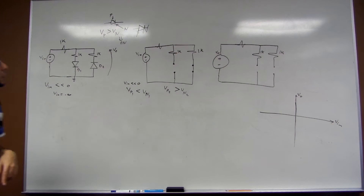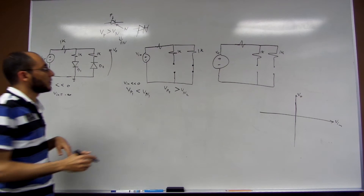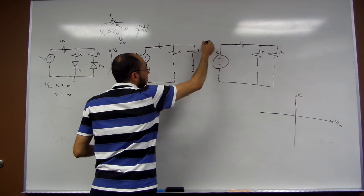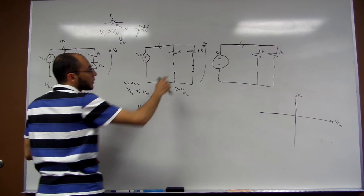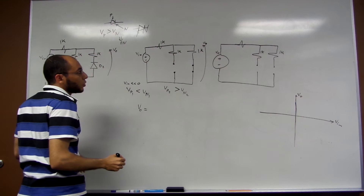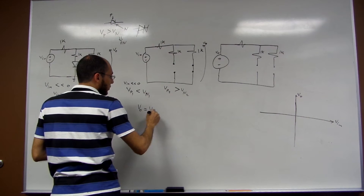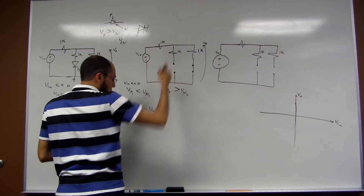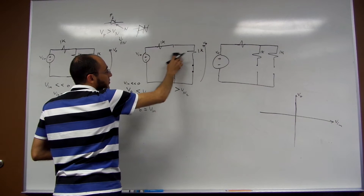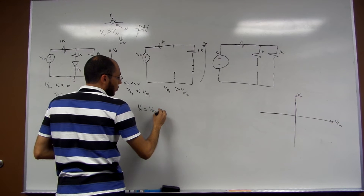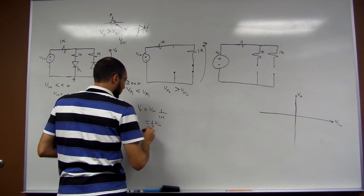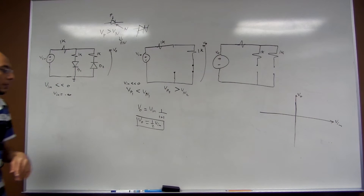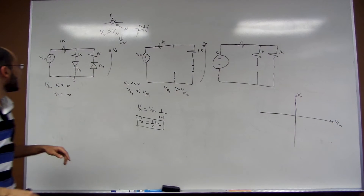For the ideal diode case, we replace D2 with a short circuit — not with a battery. So V_output equals the voltage over this 1 kΩ resistor and the other 1 kΩ resistor. By the voltage divider rule, V_output equals V_input multiplied by 1 over the sum (1 + 1), which gives V_output = V_input / 2.